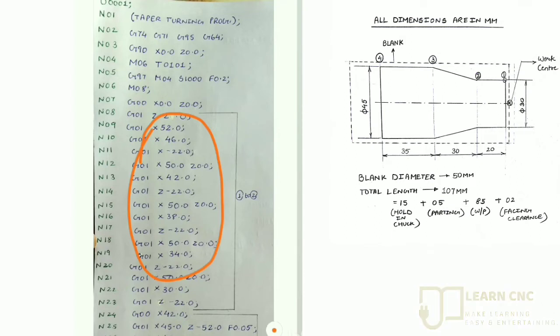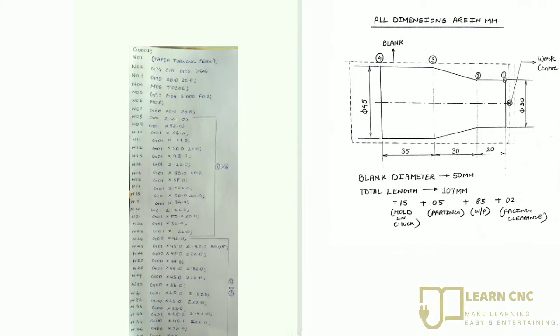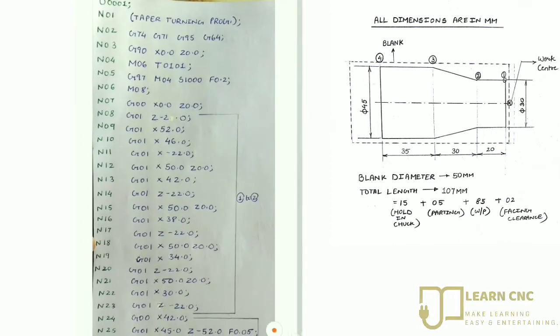So we took 4mm and every time we have to minus that. For example, the first 50 minus 4, that is 46. So X equals 46, and then Z minus 22. And then 46 minus 4, that is 42. Again Z minus 22. So like this we complete the process from 1 to 2.